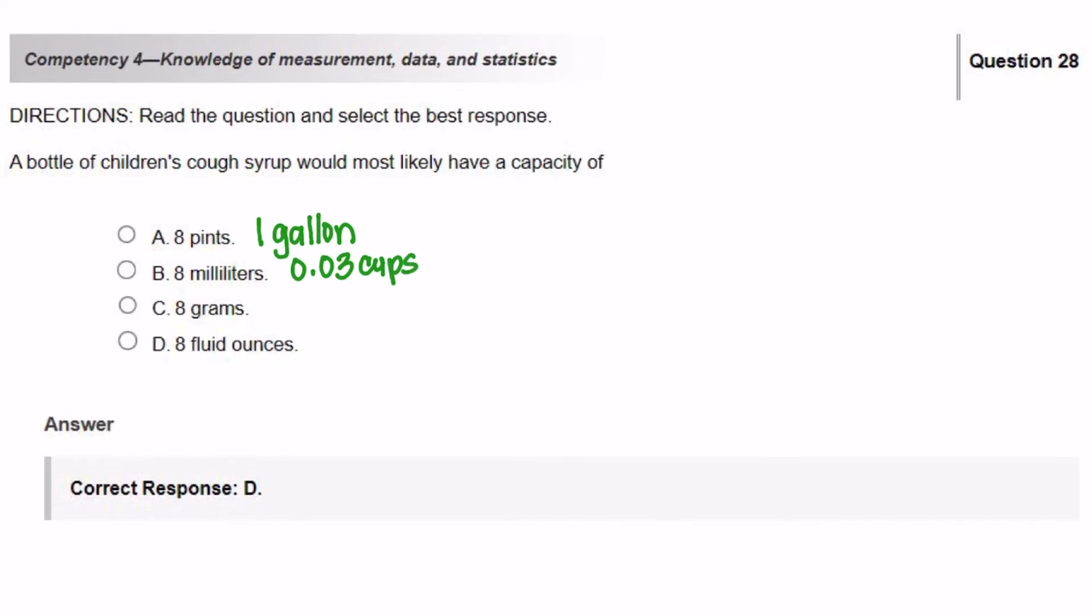So 8 grams, when you talk about grams, it's usually measuring a weight, not usually a unit of measure for a liquid. So I wouldn't pick grams at all. So when we use grams, we're talking about weight. And 8 fluid ounces of course is equivalent to 1 cup. So when you're talking about a bottle of children's cough syrup, the 8 fluid ounces is the one that makes the most sense.